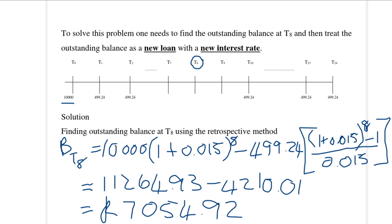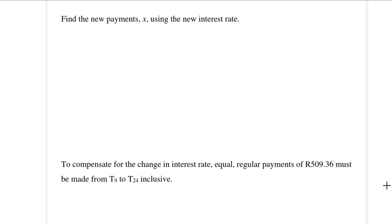The outstanding balance at t8 is R7,054.92. That is the first step. We will now treat this outstanding balance as if it is the present value of a new loan that starts at t8, using the new interest rate for this so-called new loan with a present value of R7,054.